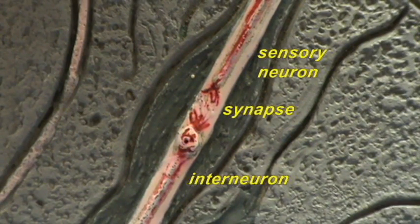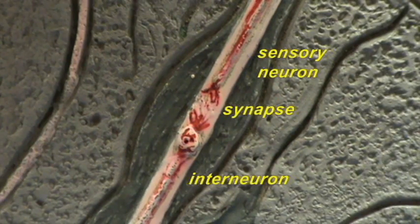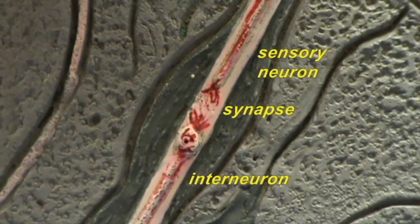This next neuron, because it's not leaving or entering the central nervous system, and it is between neurons within the central nervous system, is called an interneuron.